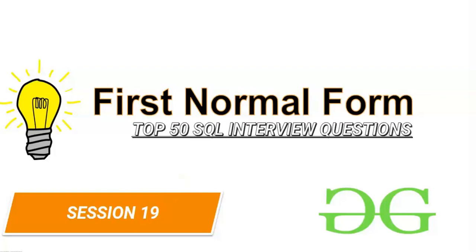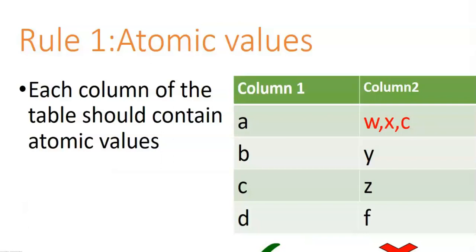Welcome. In this session we will discuss first normal form. Normalization is a very important concept, and first normal form is the basis of the remaining normal forms. We will try to cover everything regarding first normal form in a logical way. The table should be in at least first normal form, otherwise it is better not to use the database. First normal form is the lowest level of normalization and the first step towards optimizing a database. There are exactly four rules to determine whether a table is in first normal form.